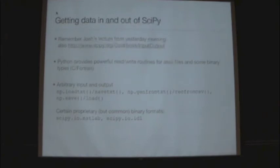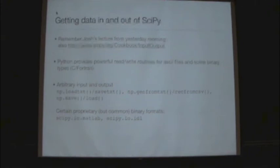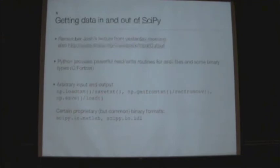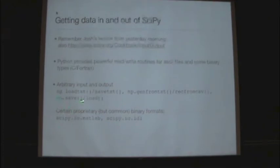One of the most fundamental data analysis tasks is getting data in and out of a language. You might have your data in a flat file — an ASCII file with text columns. Maybe it's in a SQL database. Python makes it very easy to get data out of that format and put it into Python for manipulation. Josh gave a substantial overview of Neo. There's also a cookbook on the SciPy website that specifically covers using SciPy to get data in and out.